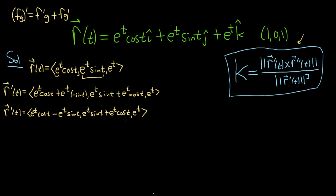Now we have to take the second derivative — that's going to be four product rules. The good news is once we do this, we're done. We just have to figure out what t is, plug that in, and use the formula.